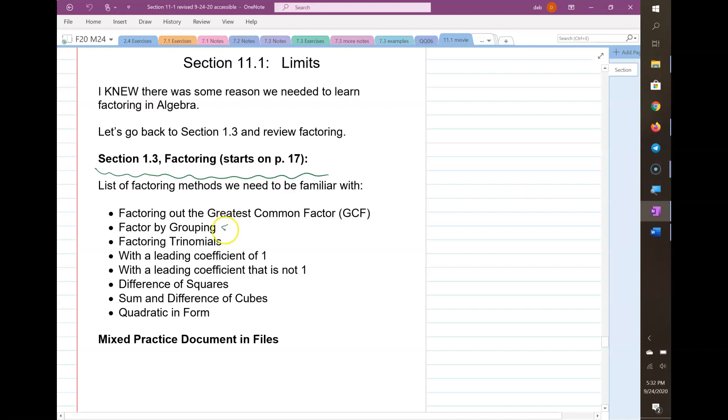Then we learn factor by grouping. We only use that one when there's four terms. So you need to learn to recognize terms. If I have 4x³ - 3x² + 5x - 1, that has four terms. So that's the only time we would think about factor by grouping when there's four terms.